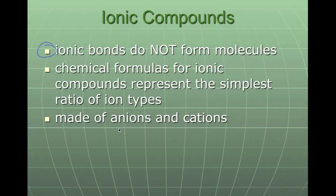The chemical formula for an ionic compound represents the simplest ratio of the ion types, meaning that when we can reduce, we reduce. So, if we had an example of sodium chloride and it was Na2Cl2, we reduce that just to NaCl, because the simplest ratio would be a one-to-one ratio.